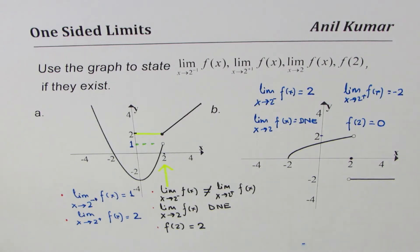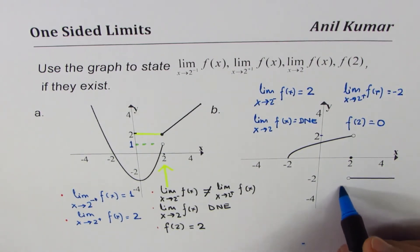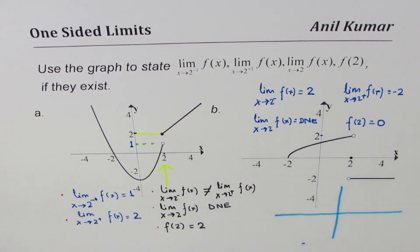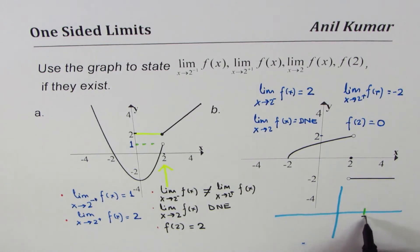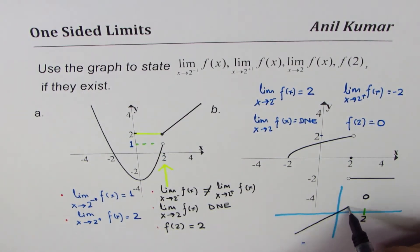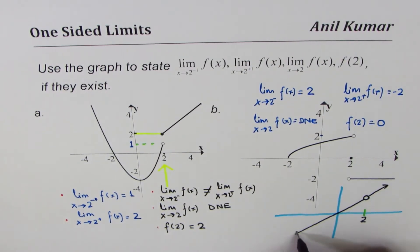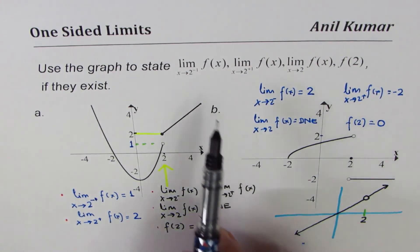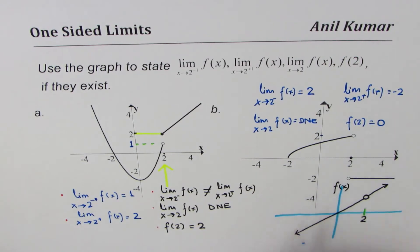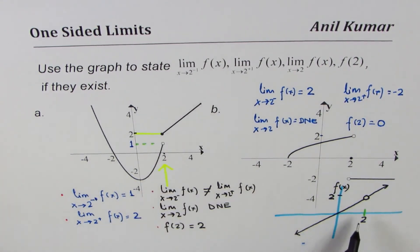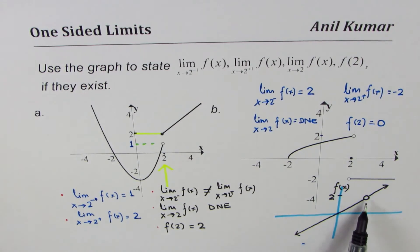Now for your practice, let me sketch a simple graph which has a value at x equals 2. Let's say this is x equals 2 — our point of focus. The graph has a hole at 2 and a straight line going through. Can you tell me: what is the limit of this function as you approach from the left side, from the right side, what is the value of the function at 2, and what is the limit at 2? Answer these four questions for the given graph.